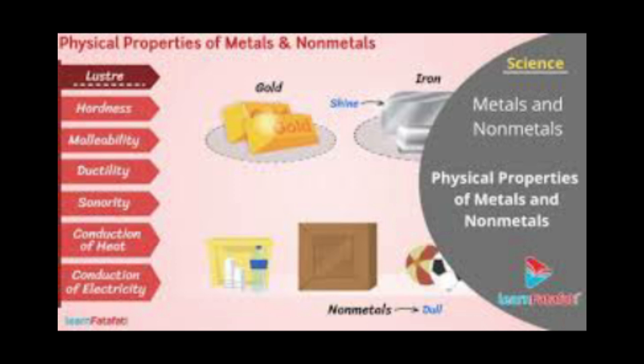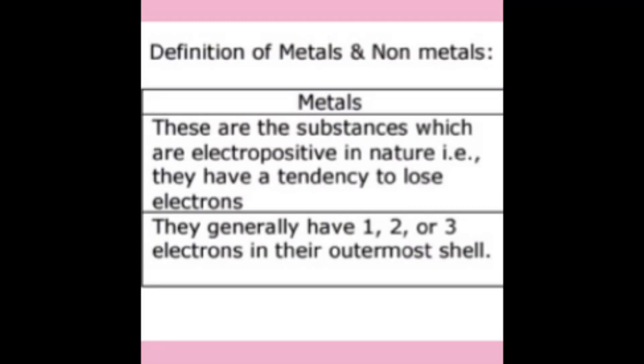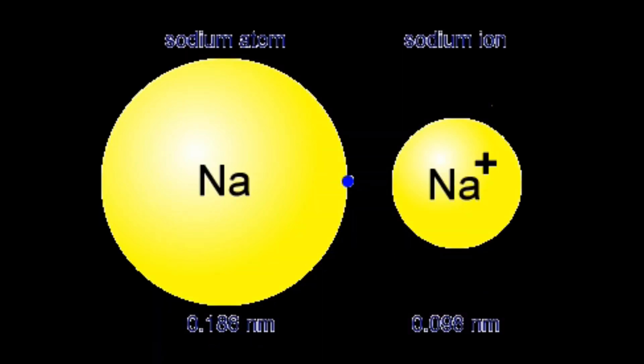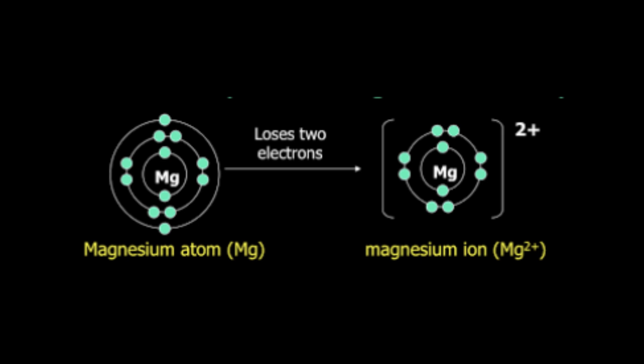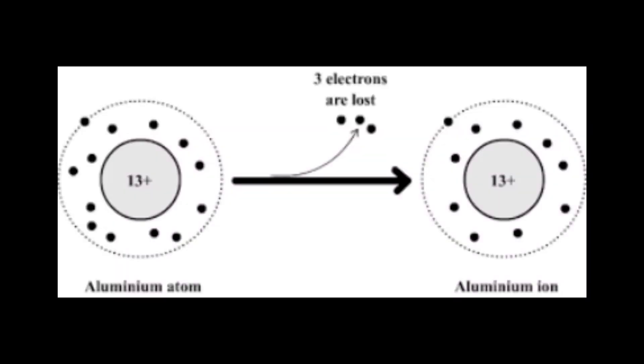Let us define what metals are. Metals are defined as elements which form positive ions by losing electrons. For example, Na+: sodium loses one electron and becomes Na+. Mg2+: magnesium loses two electrons and becomes Mg2+. Al3+: aluminium loses three electrons and becomes Al3+.